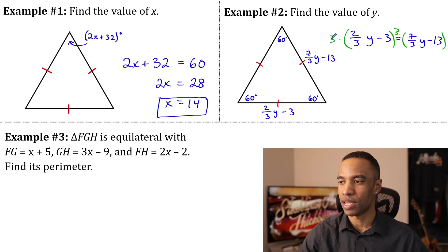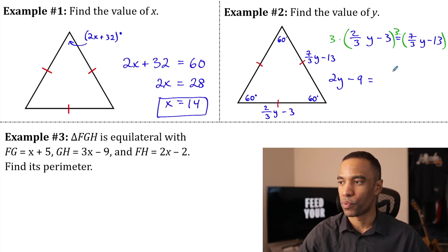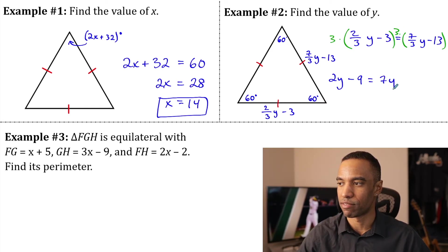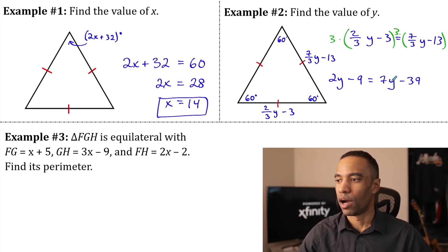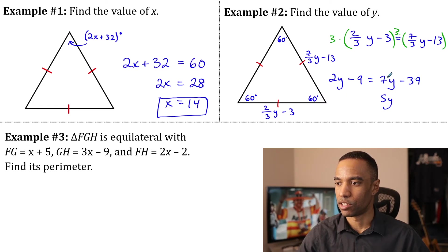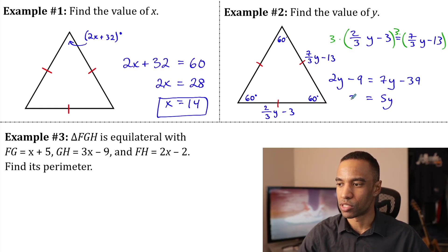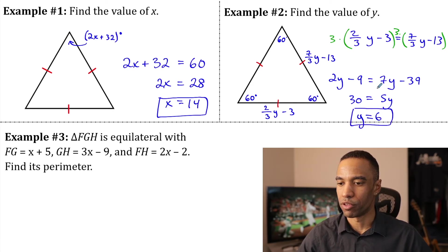Multiply both sides by three from the jump just to get the fraction right now. Distribute the three. Three times two-thirds is just two. So, we get 2Y there. And three times three is nine. So, 2Y minus 9 equals three times seven-thirds is 7. So, 7Y minus three times 13 is 39. Subtract 2Y from both sides, add 39 to both sides there and divide by 5. And we get Y equals 6. So, we solved those two there.